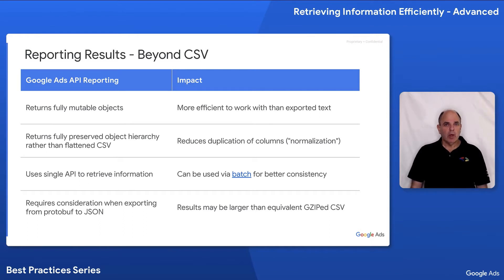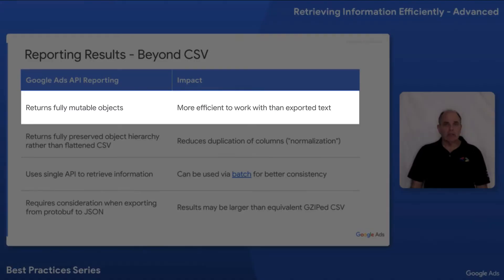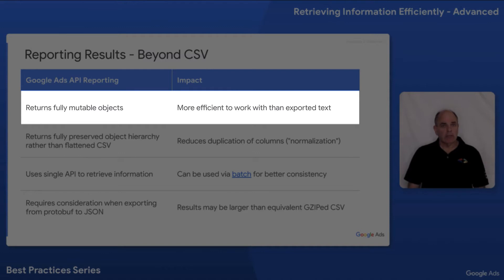The reason why we did this is because the reports in the new API are more advanced. Rather than getting a static output in CSV, a report returns fully mutable objects, which means it's easy to take the results of a report, make changes, and send it back to the server.